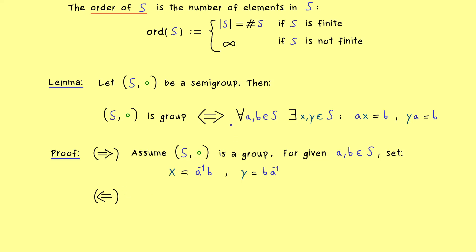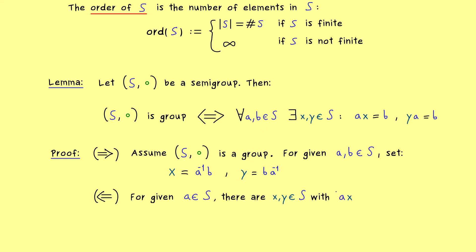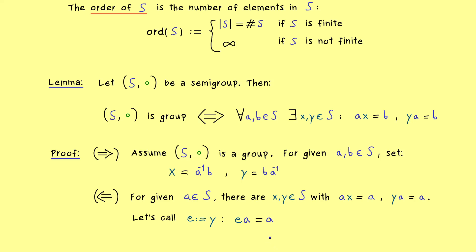The actually interesting implication is the other one. There we now have to find the identity element e and all inverses. The only two things we can use are: first that we have a semi-group, and second that for all a, b we have this solvability property. In particular, we also have this property if a equals b. Therefore in this case we find two elements x and y with the property that ax equals a and ya equals a. We already have two candidates for our neutral element. Let's pick y and call it e, so we have e times a equals a — this looks very good for a left neutral element. However, the problem is it only works for our given a.